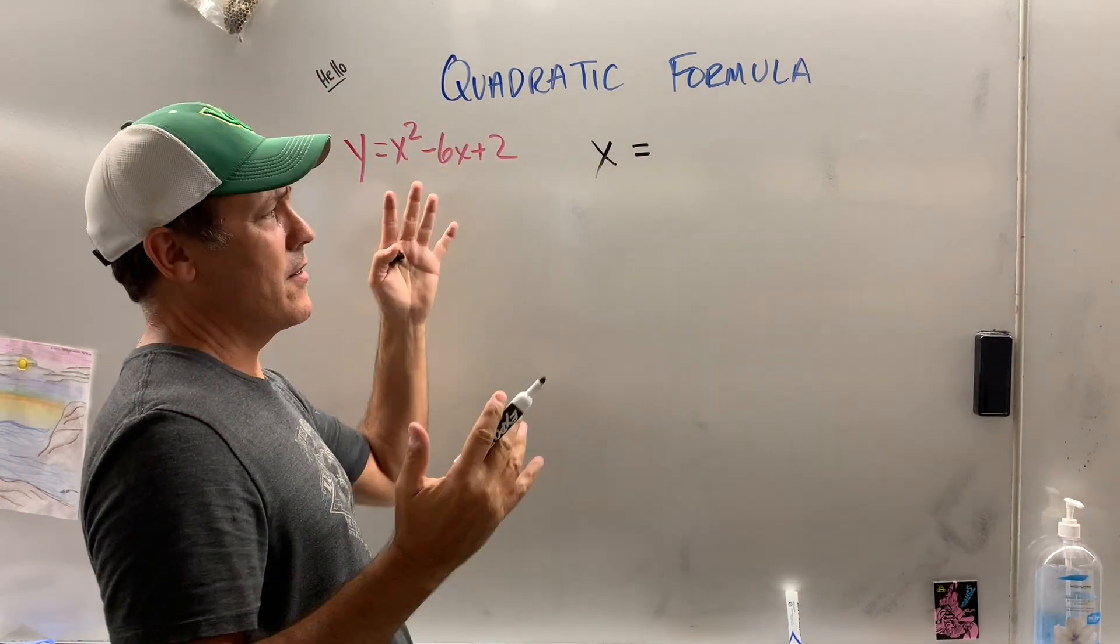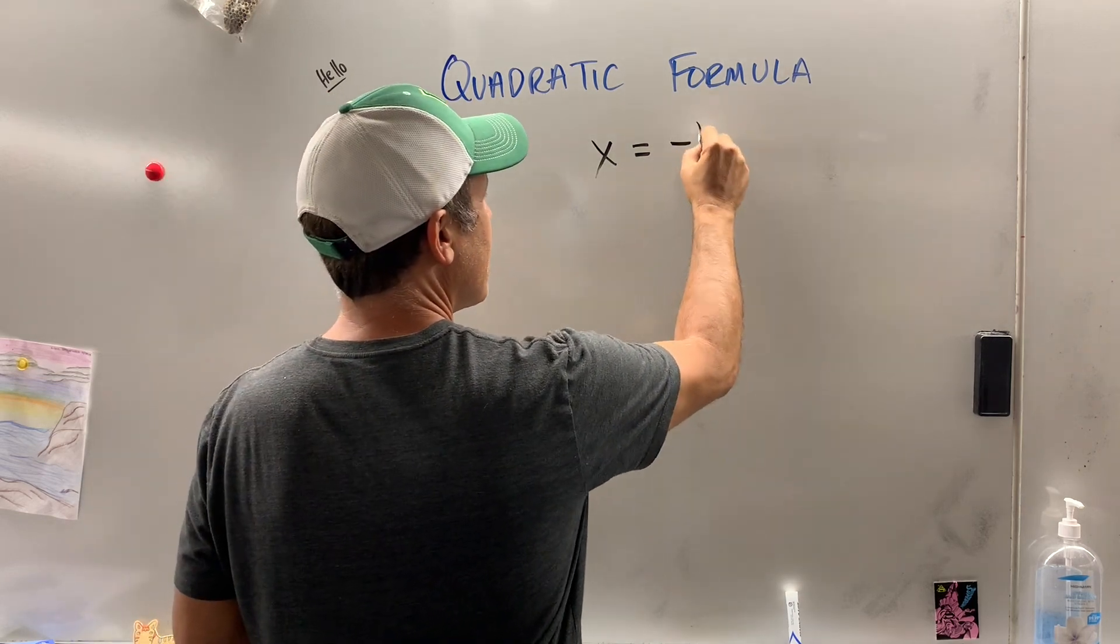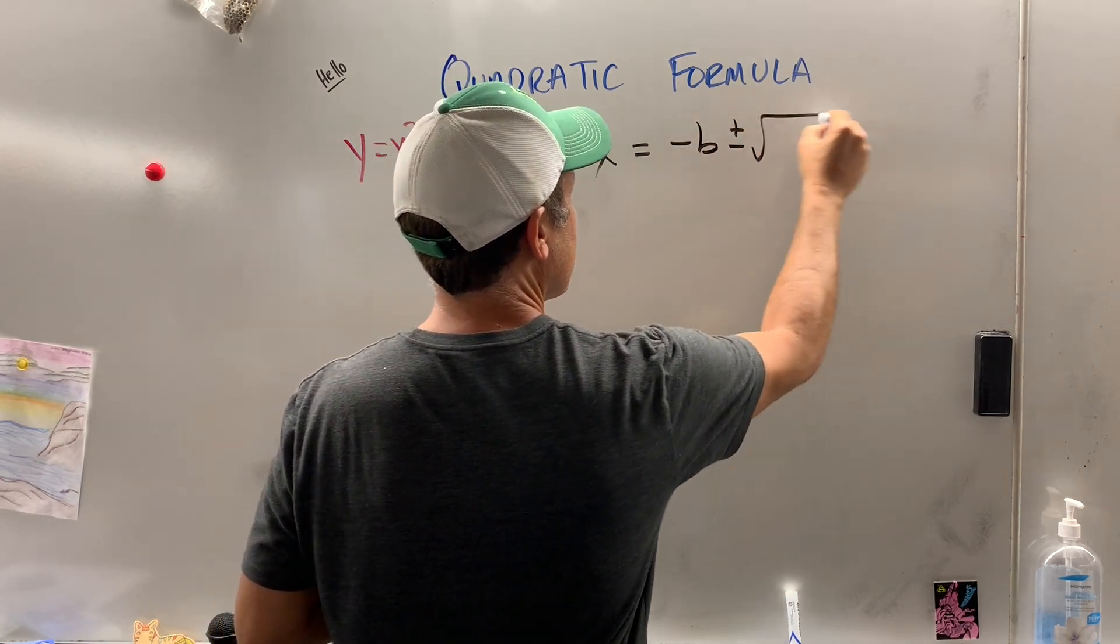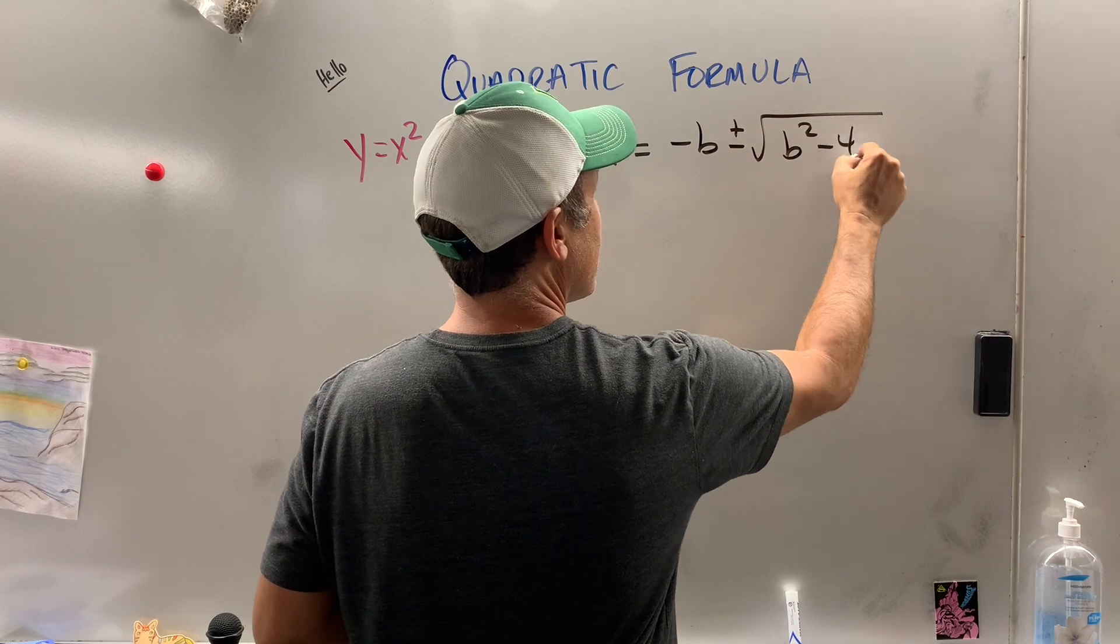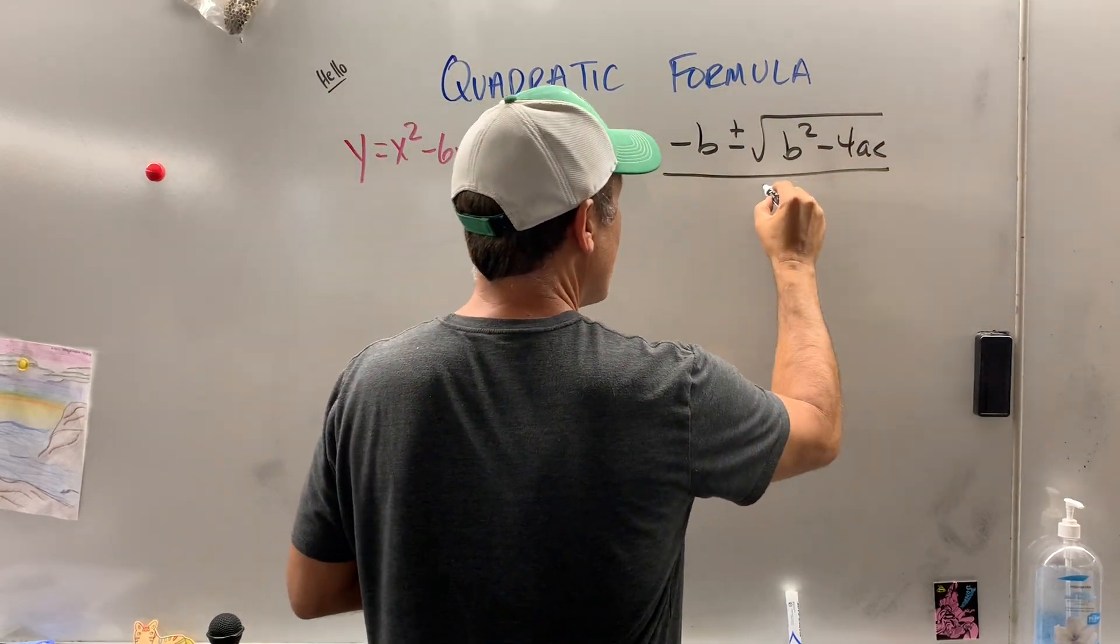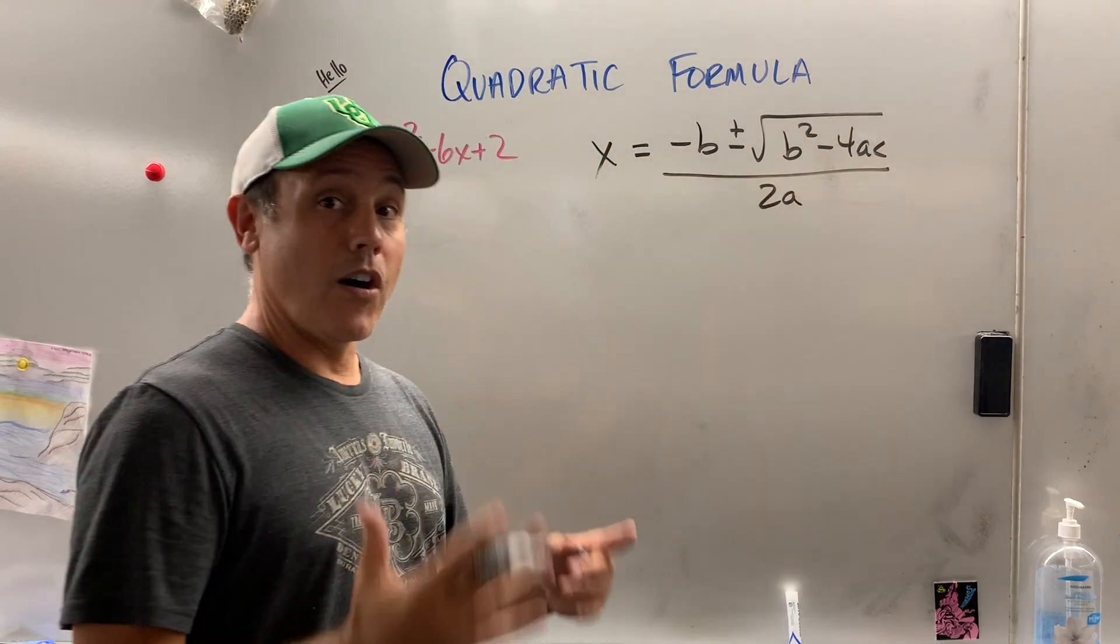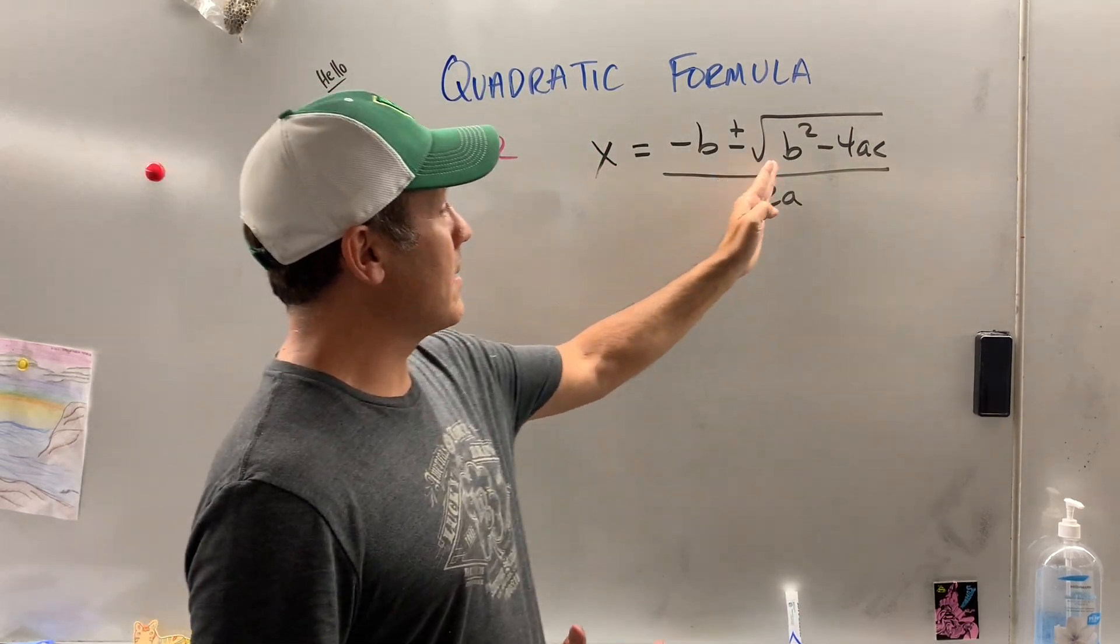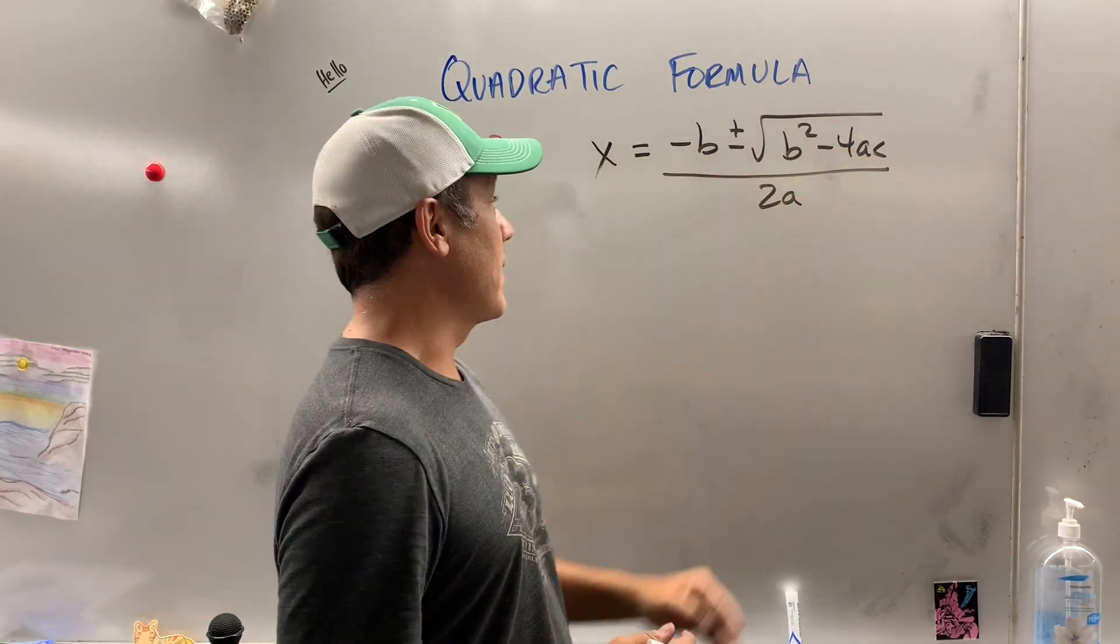A lot of kids leave the equal sign out of it. I don't know why. x equals negative b plus or minus the square root of b squared minus 4ac all over 2a. I get in the habit of saying all over because you don't want to just divide this part by 2a.